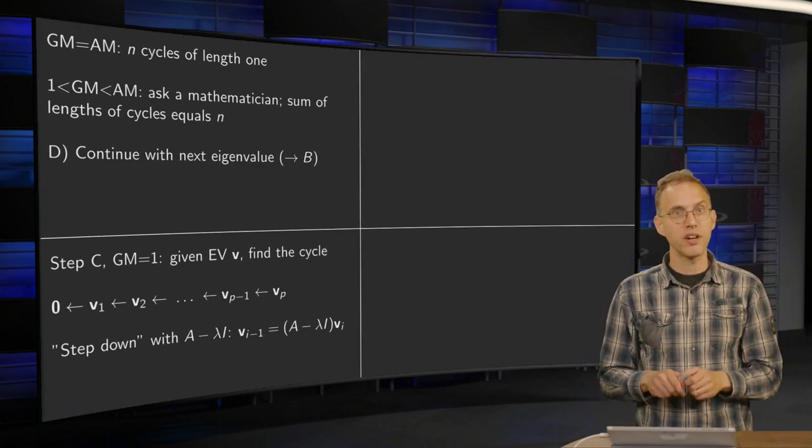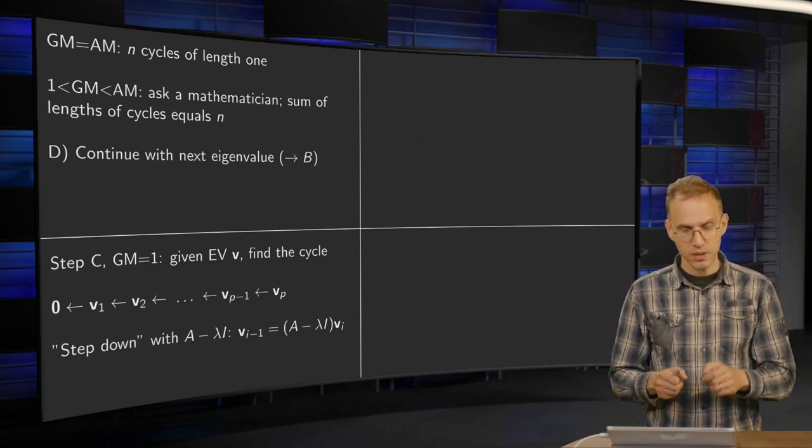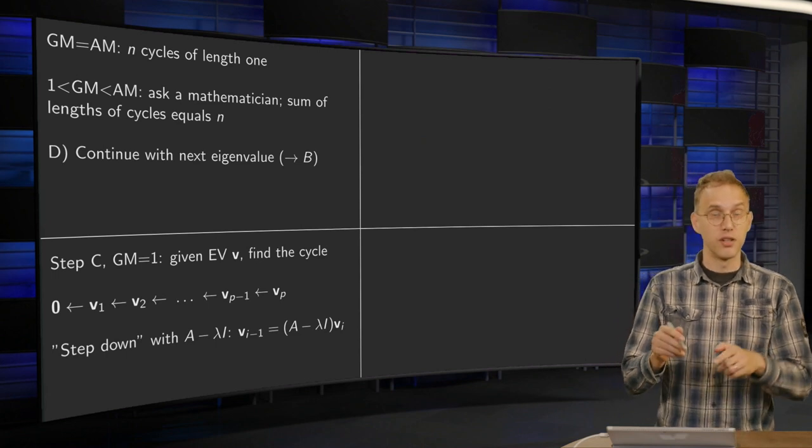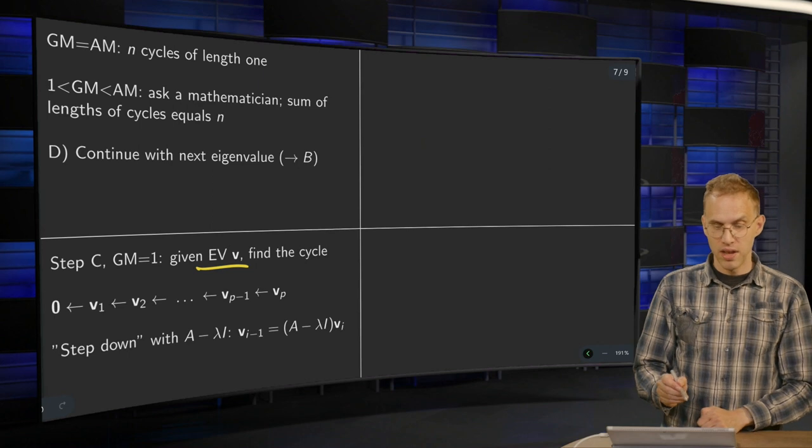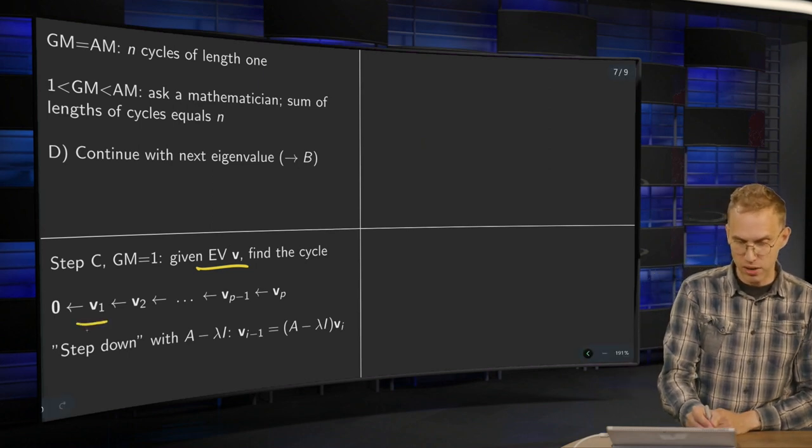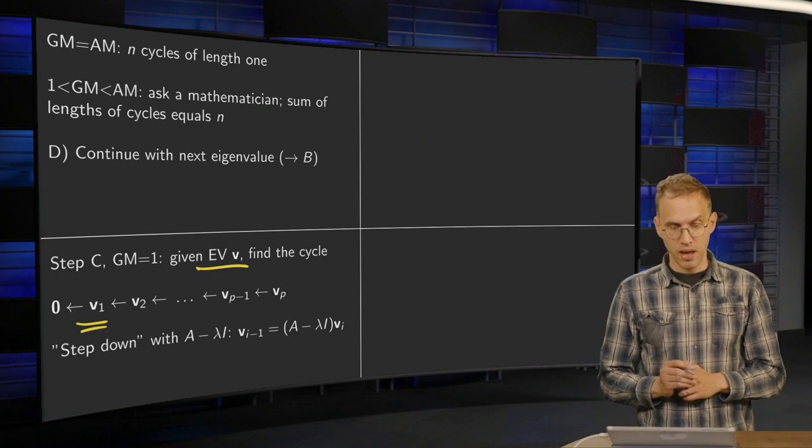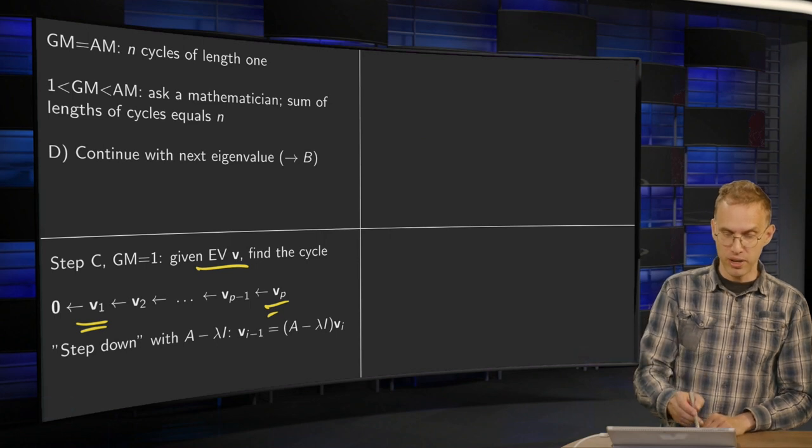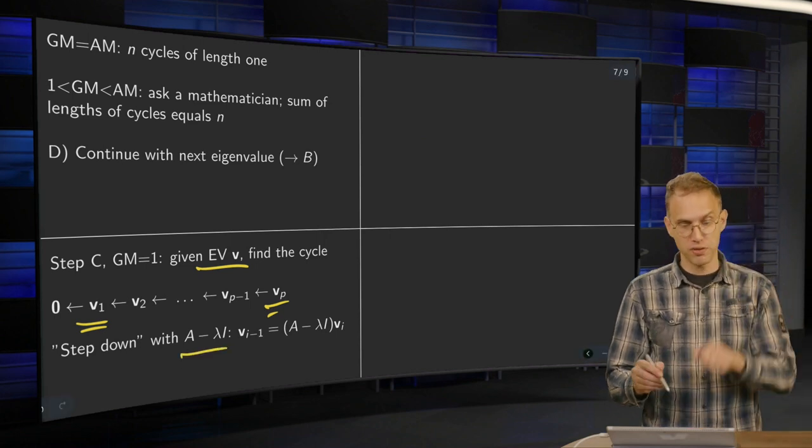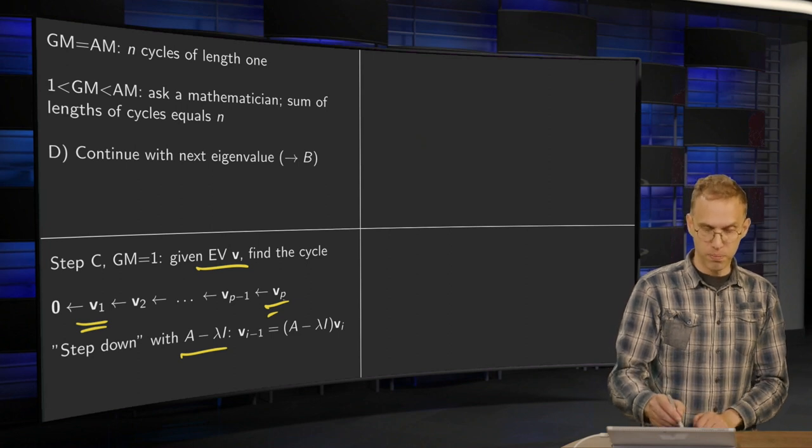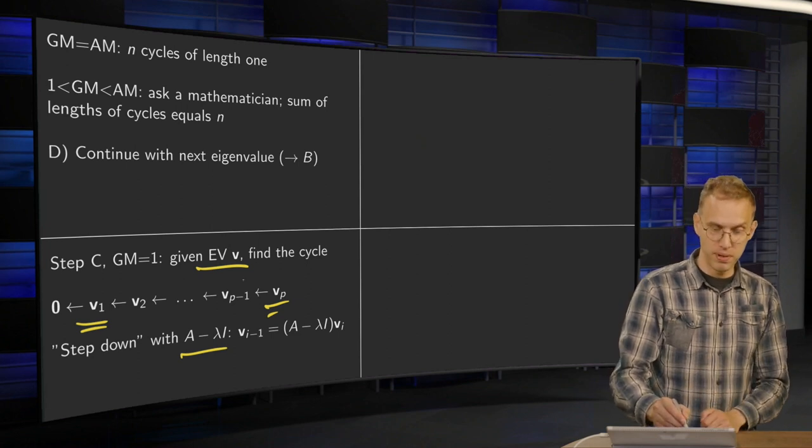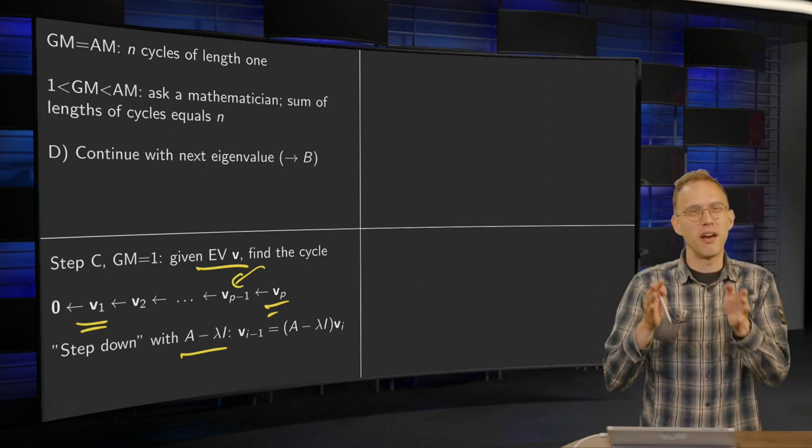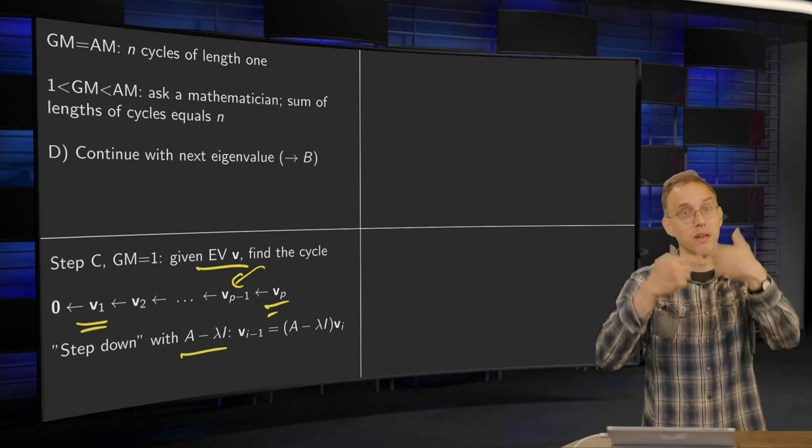So how does this work, this step C? So if the geometric multiplicity equals one, you computed the eigenvector v belonging to that. You want to find the cycle which ends with your v₁. So how do you do that? Well, if you have the last one, it's easy. If you have your vₚ, you can just step down with A minus λI. So if you have the last one, you can just compute (A - λI) times vₚ, and this gives you this one, and you step down until you are at v₁. Problem is, of course, usually you don't have the last one but the first one.